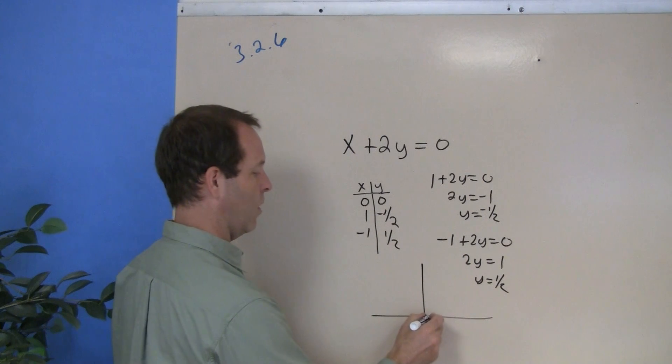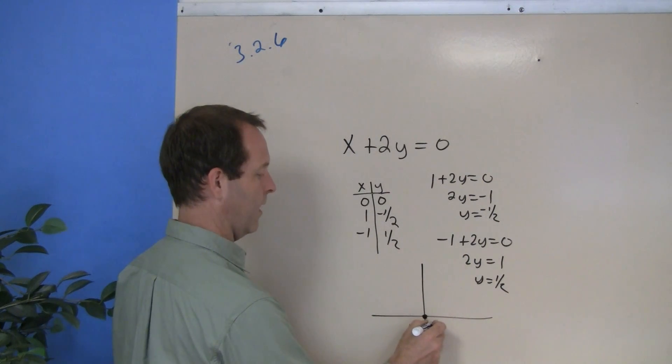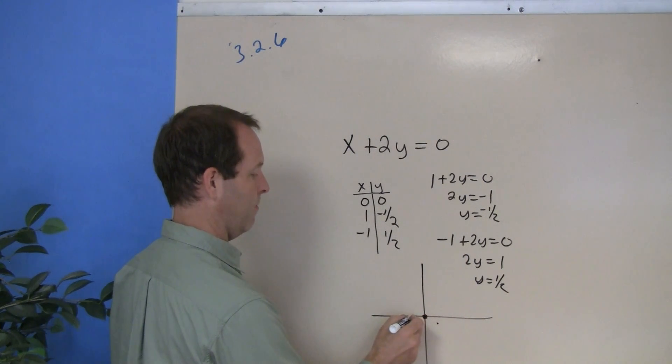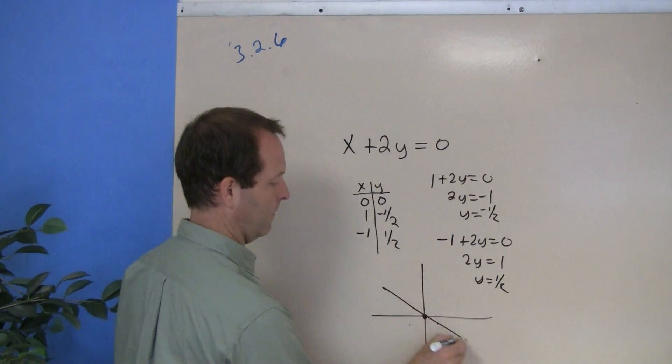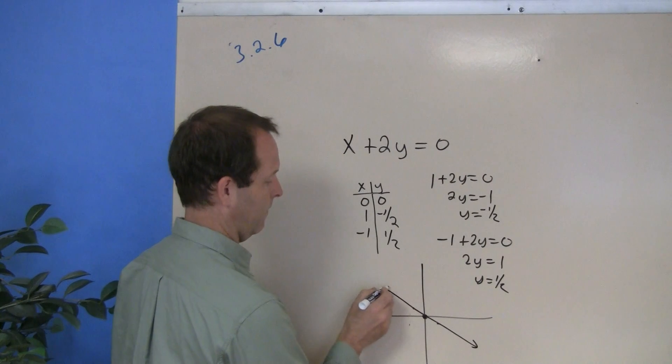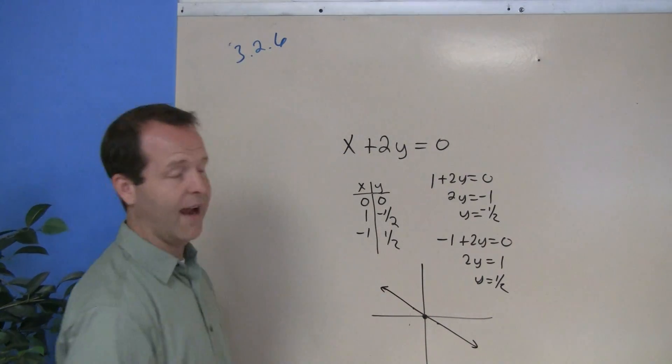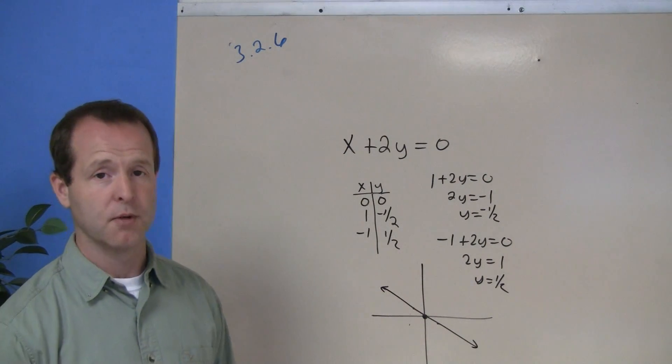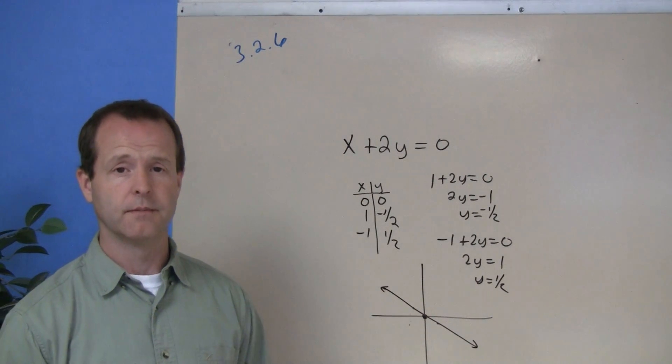Plot (0, 0), then go right 1 and down one half, then go backwards 1 and up one half. And there I have a graph of this particular equation.